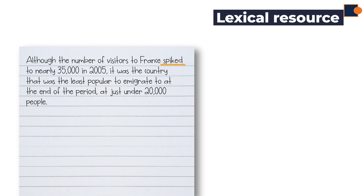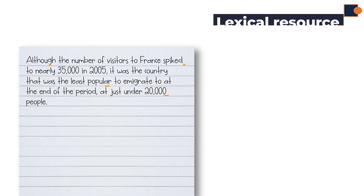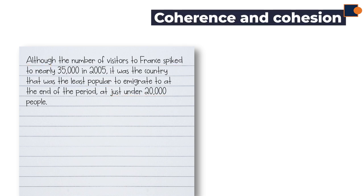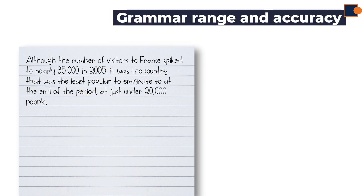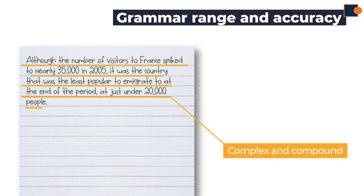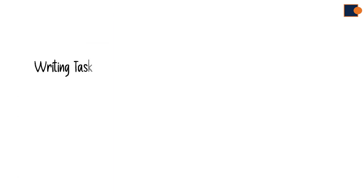Lexical resources include original words such as spiked, although, the least popular, and just under. Coherence and cohesion is met by using conjunctions like although to create coherent and comparative information. In terms of grammar range, complex and compound sentences are used.